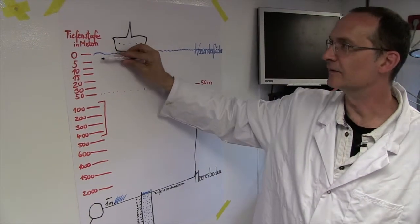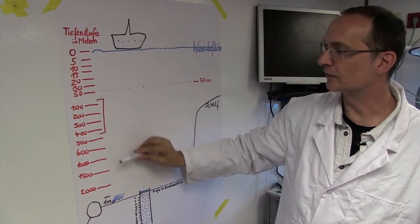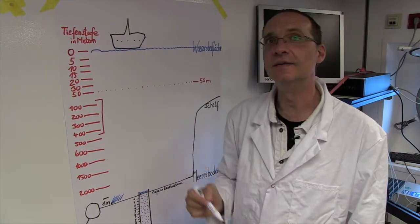One device which samples the different depths in the water column is the CTD rosette.